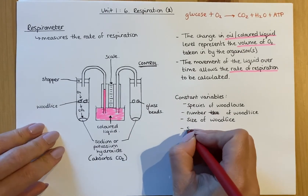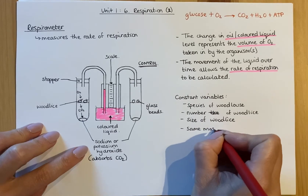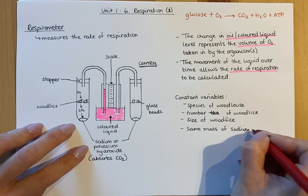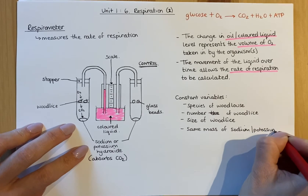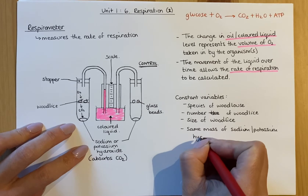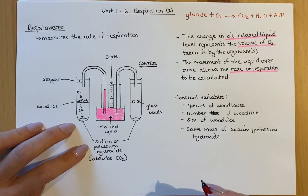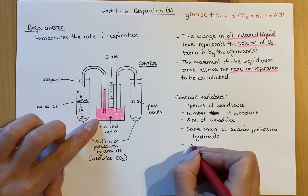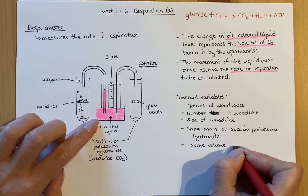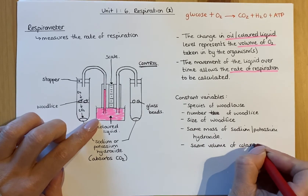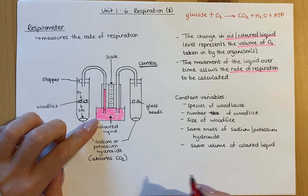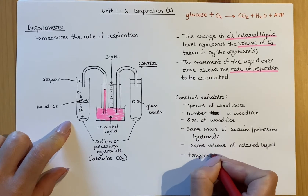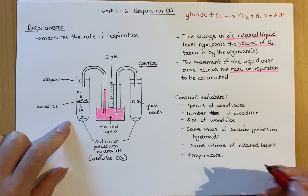You'd have to have the same mass of the chemical — the sodium or potassium hydroxide — because otherwise changing that mass might absorb more or less carbon dioxide. You'd also need the same starting level of coloured liquid or coloured dye, so the same starting volume of that coloured liquid. These organisms are also affected by room conditions, so you'd have to keep temperature the same so that the organism wouldn't get too cold or too hot.